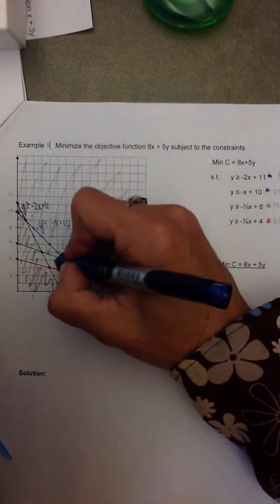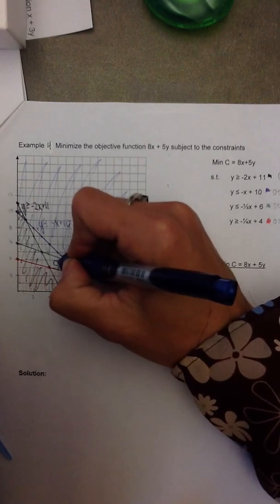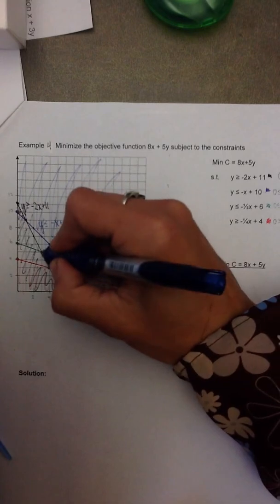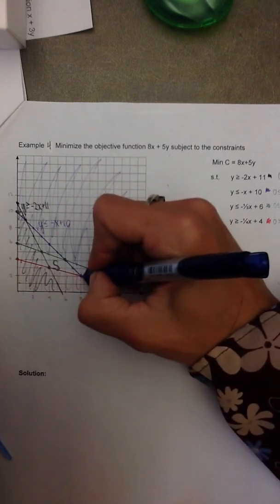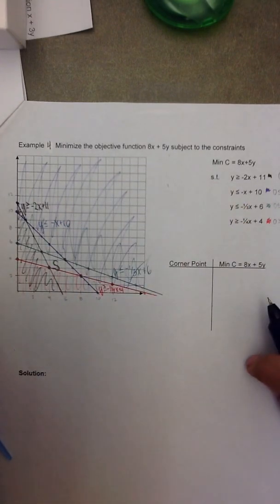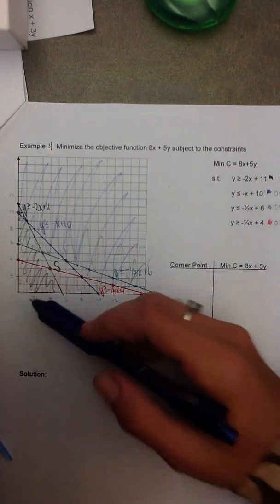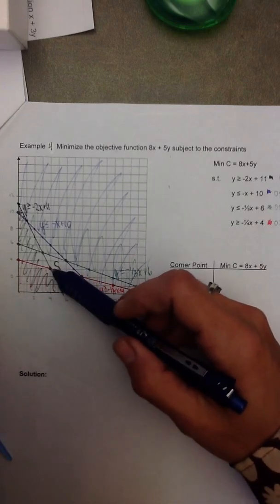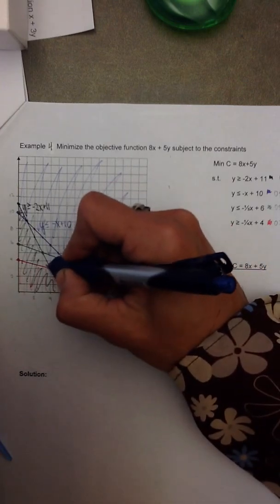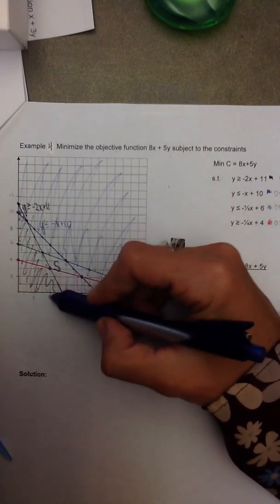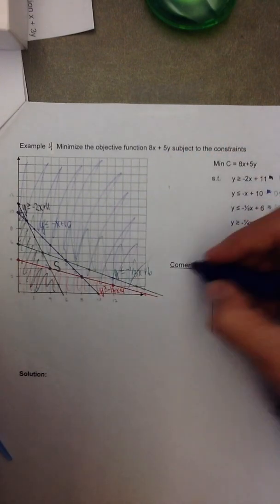And what I'm left with is this four-sided feasible set S, where I have to find the four corner points that define that feasible set. Luckily, those all happen on the crosshairs of my graph, so I should just be able to count them. You can see this first one here. I'll label these, if you'd like. The first one, A, is the point 4,3.